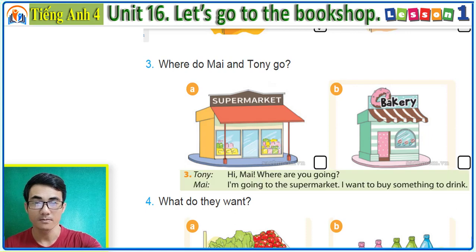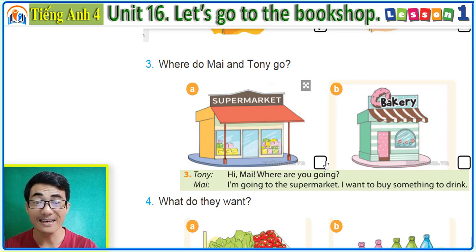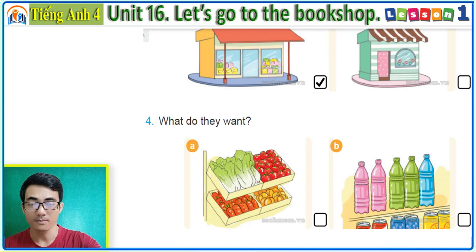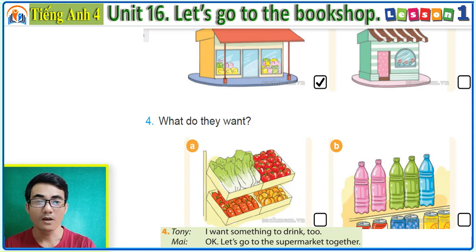3. 'Hi My, where are you going?' 'I'm going to the supermarket. I want to buy something to drink.' 4. 'I want something to drink too. Okay, let's go to the supermarket together. I want to buy something to drink.'